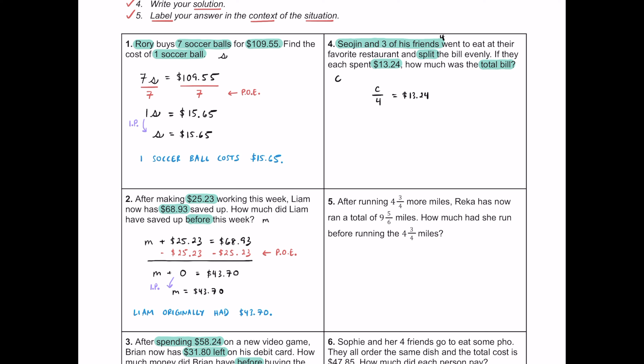To find the total bill, we multiply both sides by four — the fours cross-cancel on the left, giving us 1C. On the right, $13.24 times four gives us $52.96. Dropping the one is the identity property of multiplication. This step was the multiplication property of equality. Conclusion: the total bill was $52.96.